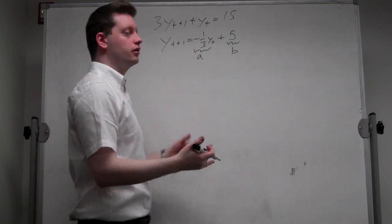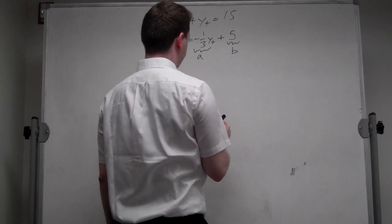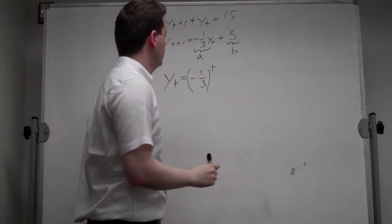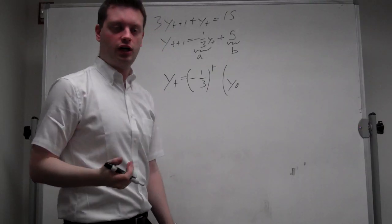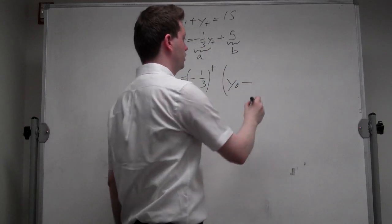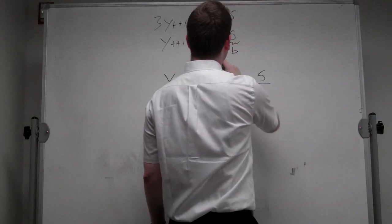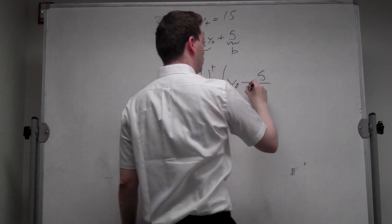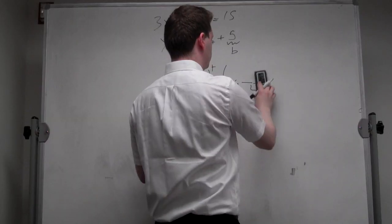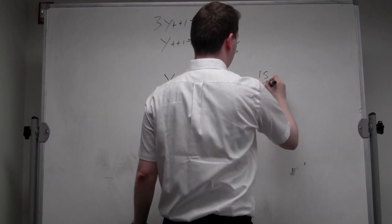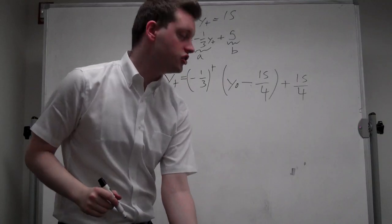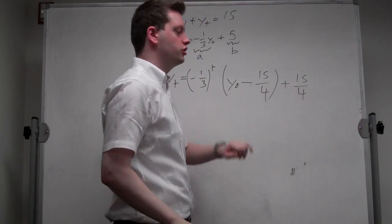We can immediately rewrite our solution. yt equals a to the t — so minus 1/3 to the power of t — times y0 minus b over 1 minus a, which is 5 over 1 minus 1/3, that's 5 over 4/3, which we can rewrite by multiplying up as 15 over 4, plus 15 over 4. So we've found our steady state: it's 15 over 4, for some initial deviation y0.